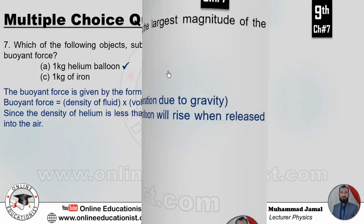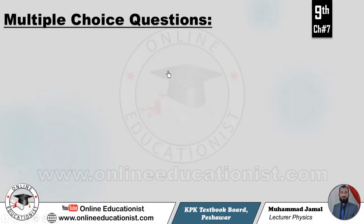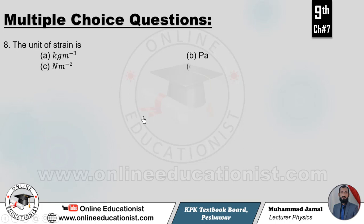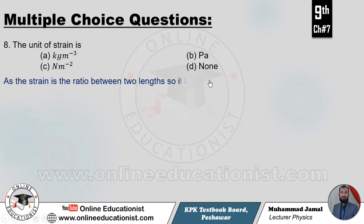MCQ number 8: The unit of strain — strain is basically change in length divided by original length. The units are meter/meter, so they cancel out. Therefore strain has no unit. Option D is correct.